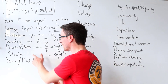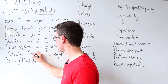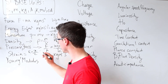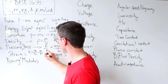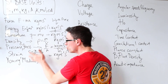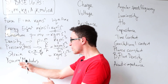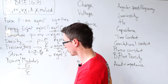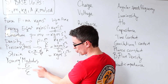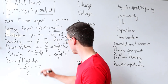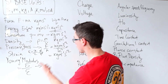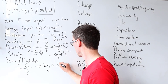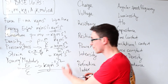Strain is interesting because it's just the extension divided by the original length — meters divided by meters — so strain has no units. Young's modulus is stress over strain, and since strain has no units, Young's modulus has the same SI base units as stress: kg m⁻¹ s⁻².